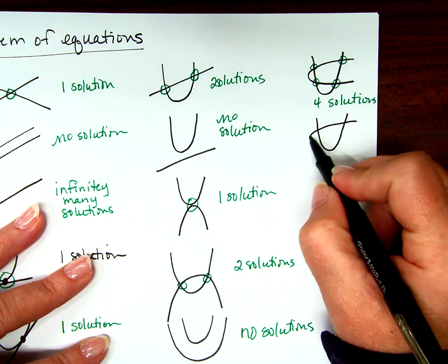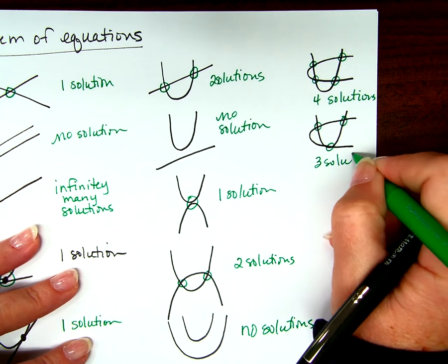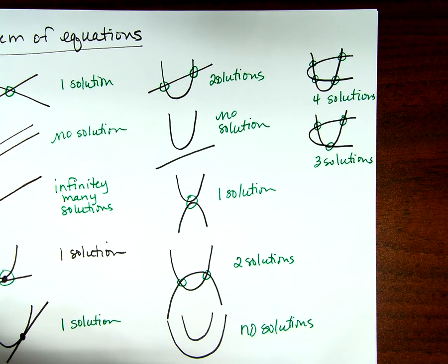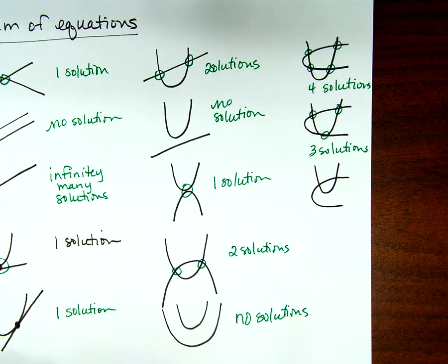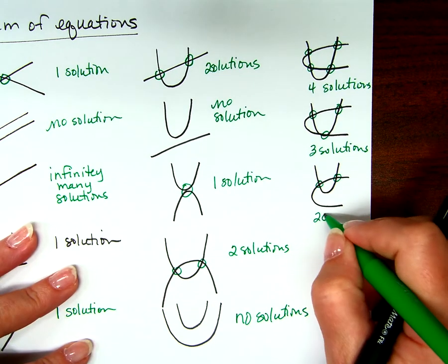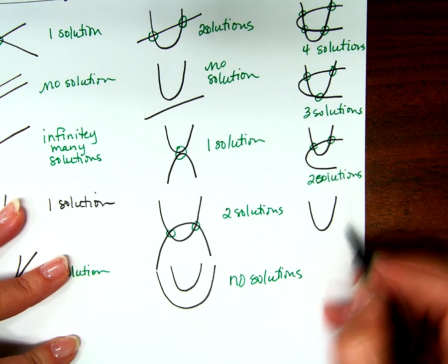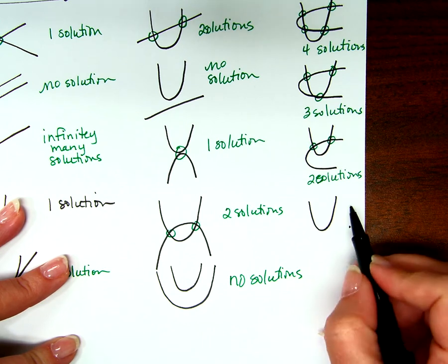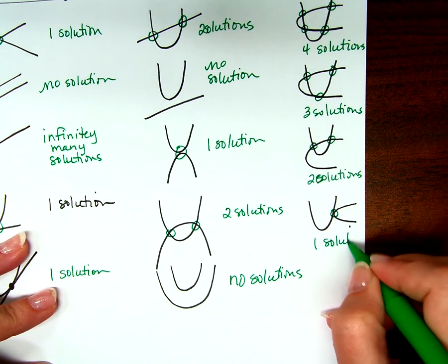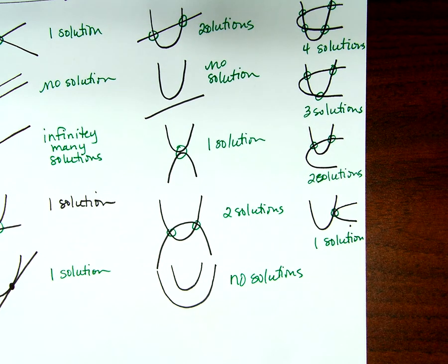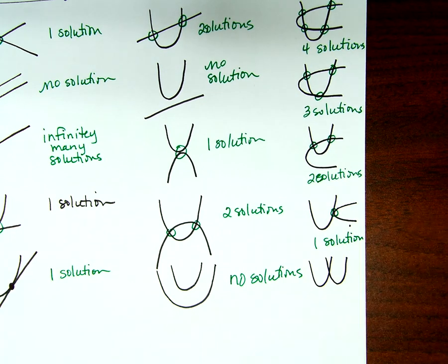So like this — one, two, three. And maybe like this? Two solutions? How could I get one solution? If the vertex is right there, that would work, wouldn't it? So if they both open up like that, how many solutions is that? Just one solution.